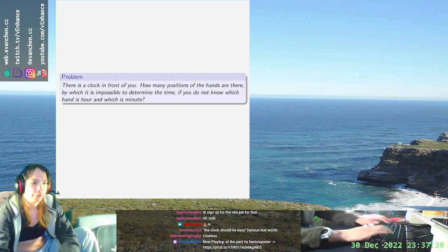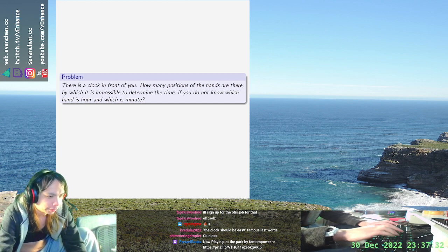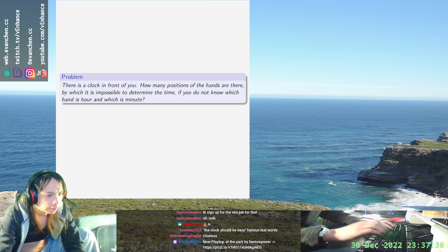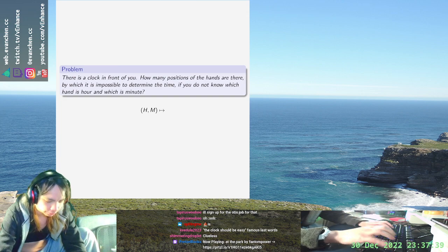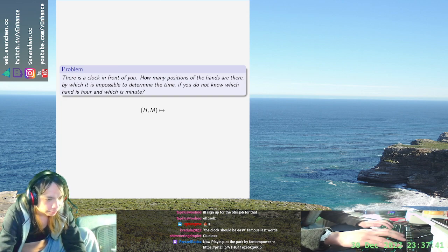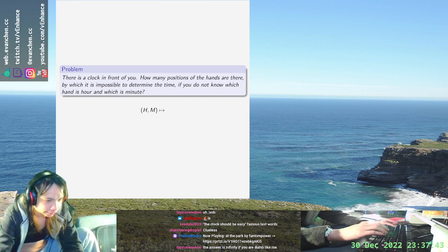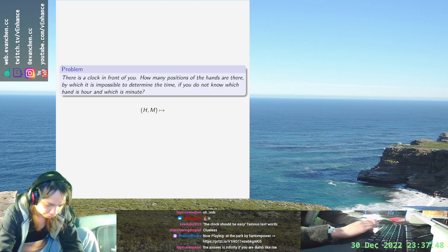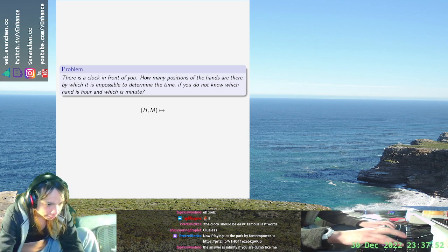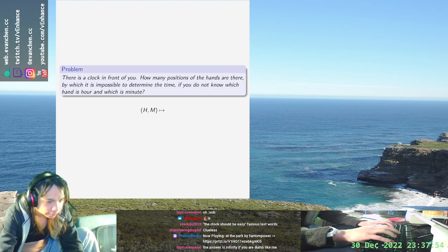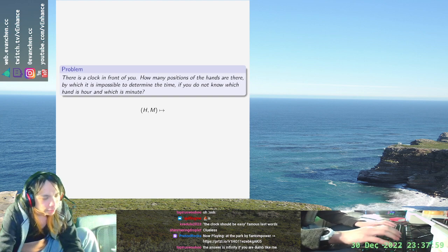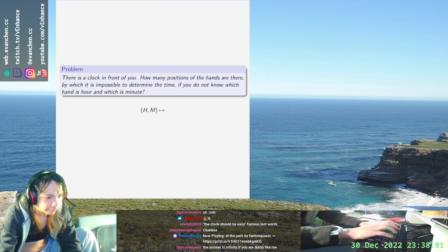So what we're going to do is first we're going to just write down the map h comma m maps to. So the minute hand always goes to, we'll do everything in degrees, 6m. And the h hand is like 30h plus some fraction due to the minutes, which is m over 60.